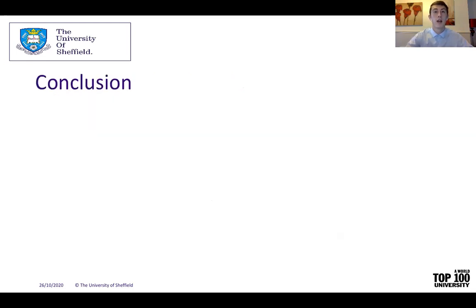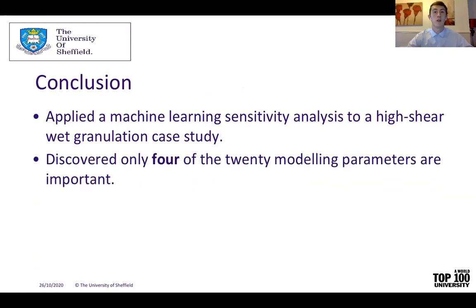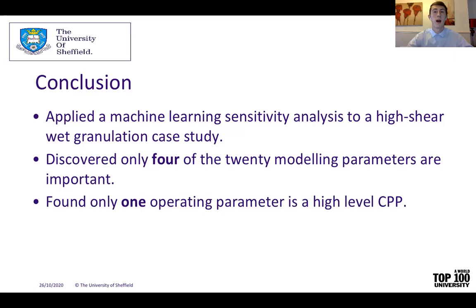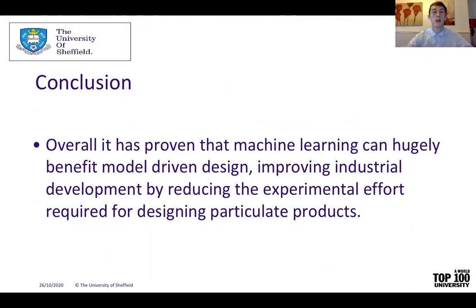Therefore, I believe this high-shear wet granulation case study has hit all the objectives set at the beginning of this work. It has applied a machine learning sensitivity analysis to the case study. It has discovered that only four of the 20 modelling parameters are important. It has found only one operating parameter to be a high-level CPP, and ultimately reduced the experimental effort by 42.1%. I believe this work has proven that machine learning can be used to hugely benefit model-driven design, and I am excited for the future to learn how much this can improve industrial development by reducing the experimental effort required to design particular products.